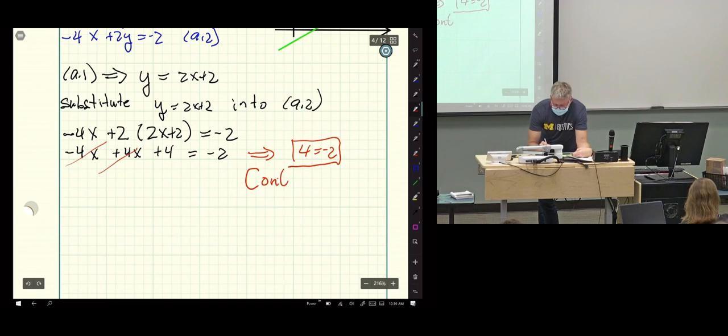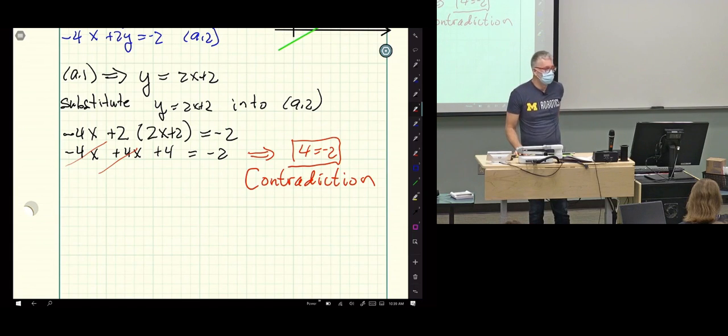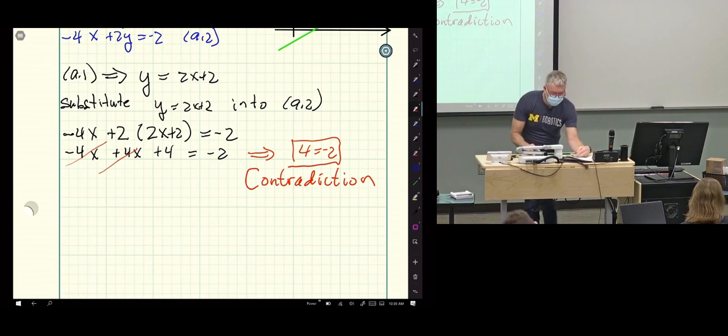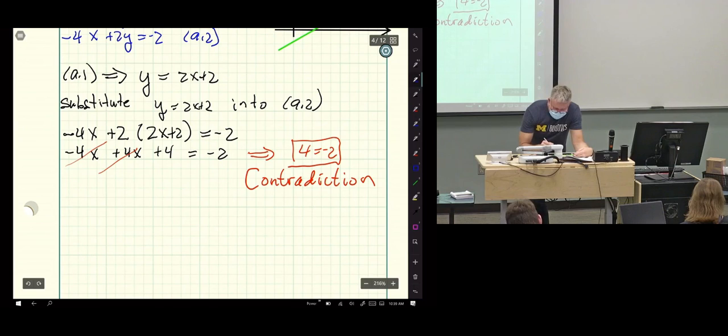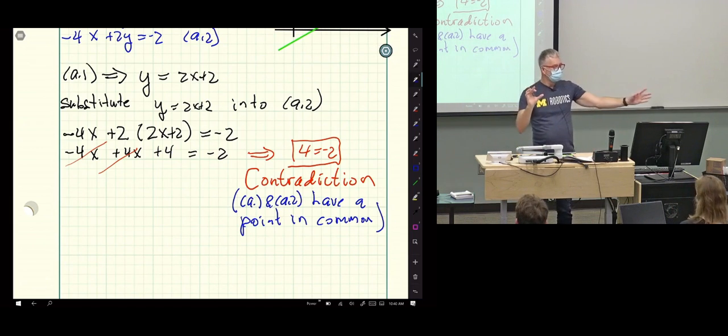And that's a contradiction. I mean, at least the last time I checked, 4 and minus 2 were distinct integers. So what are we contradicting? We're contradicting that a.1 and a.2 have a common solution. They have a point in common, let's put it that way. The logic on that work for you?